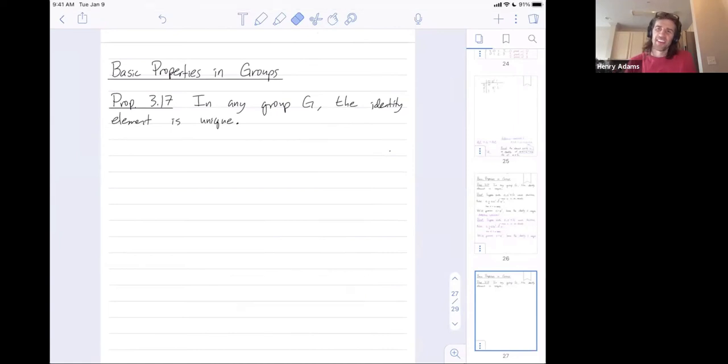All right, welcome folks. I wanted to talk about how in a group, the inverse of any element is unique. So we just talked about this proposition, how the identity element in a group is unique. In a group, there's only one identity.